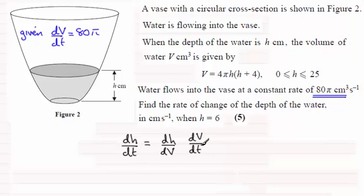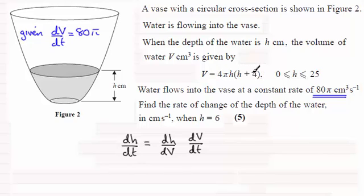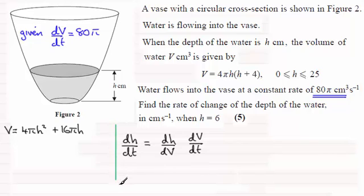dv by dt we've already got — it's the constant value of 80 pi. What we need to get is dh by dv. We can get that from knowing that v equals this equation here. We can find dv by dh and then reciprocate it, and that will give us dh/dv. So I'm going to take this and first of all expand it so we can get ready to differentiate it with respect to h. Therefore, v equals 4 pi h squared plus 16 pi h.